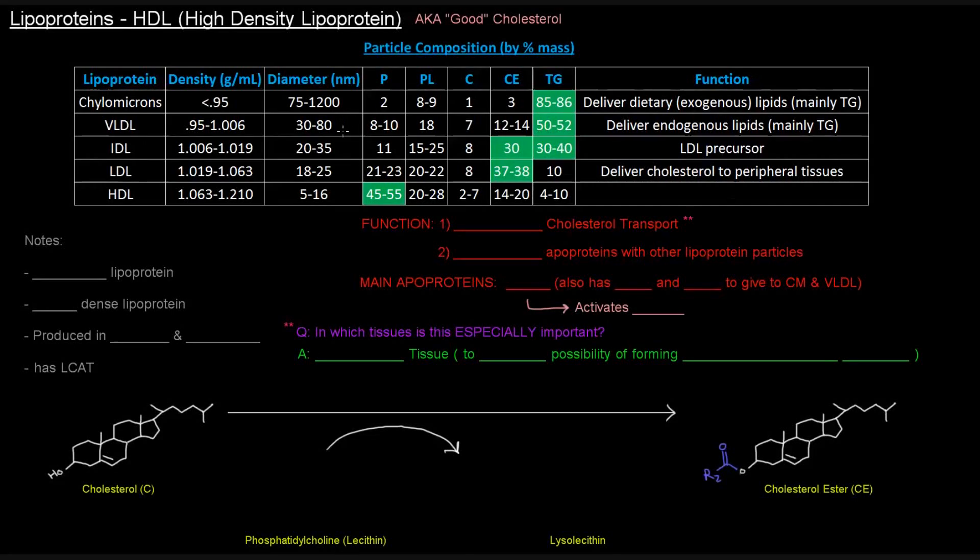Last one is HDL, or high-density lipoprotein, often called good cholesterol. It is the smallest of lipoproteins and the most dense lipoprotein, hence high-density lipoprotein. It is produced in the liver and intestine, and one really important bit of information about it is that it has LCAT.